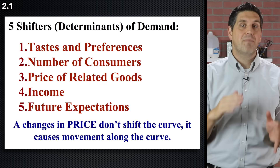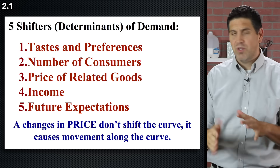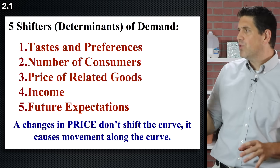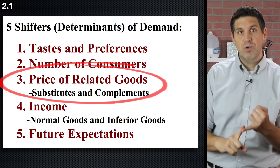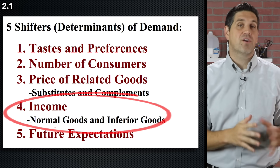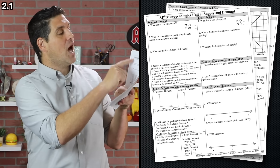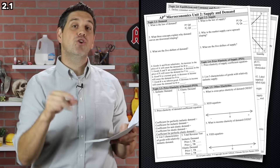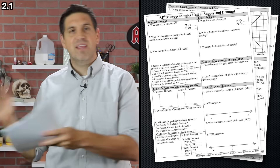That's completely different from the five shifters of demand — things other than price that cause the demand curve to increase or decrease. These are all things that affect buyers and consumers; nothing here affects production, because that's supply. Inside the price of related goods, there are substitutes and complements. And inside income, there are normal and inferior goods. Take out the study guide and fill out topic 2.1 demand, verify you know those shifters, and make sure you can practice what happens when there's a change in the price of a substitute.